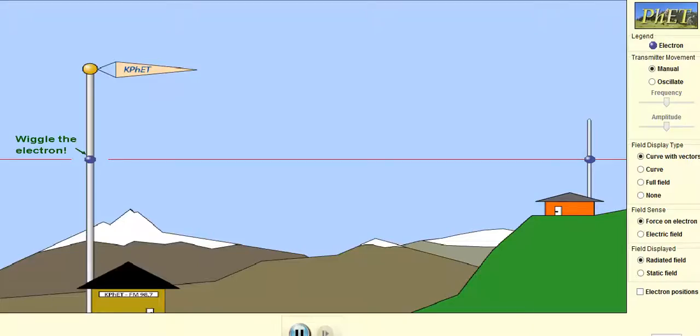So here's what you'll see. You have your radio station here, KFET FM 98.7, and it has a big broadcasting transmitter antenna. And over here, this could be your house with a little antenna there for receiving the signal.